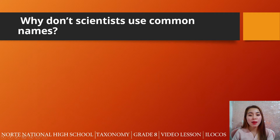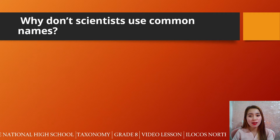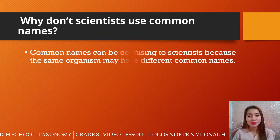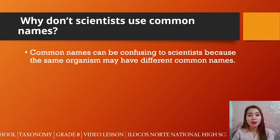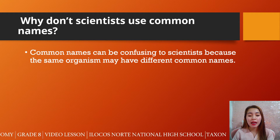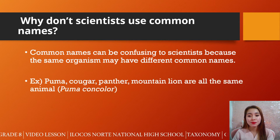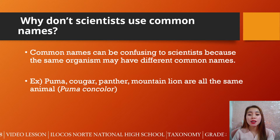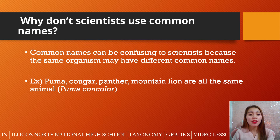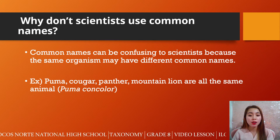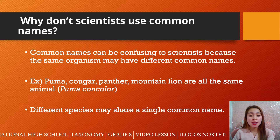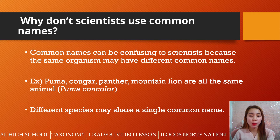So going back to the question: why don't scientists use common names? Common names can be confusing to scientists because the same organism may have different common names. For example, the Puma, the Cougar, the Panther, and the Mountain Lion are all the same animal — they are called Puma concolor. So different species may also share a single common name.